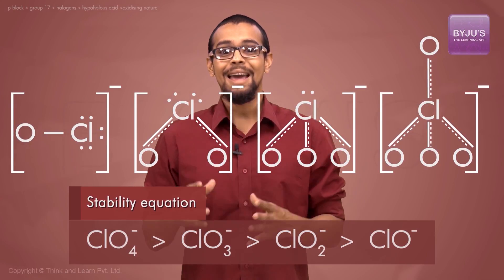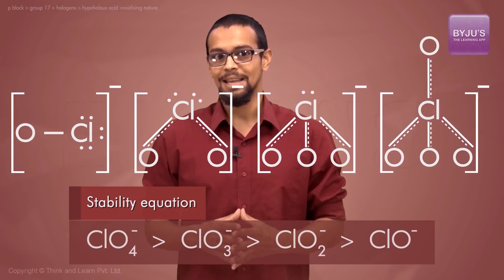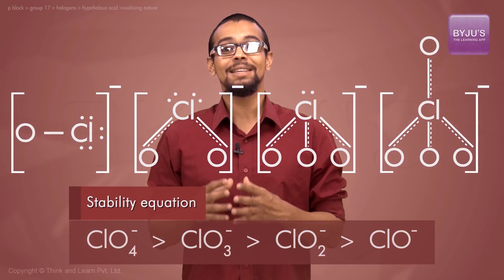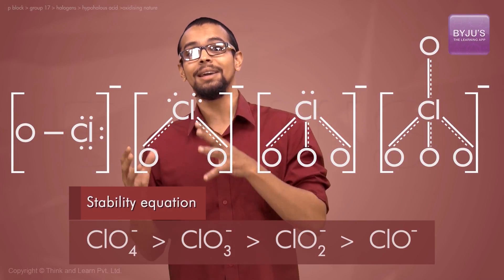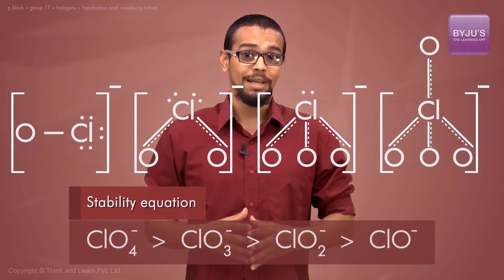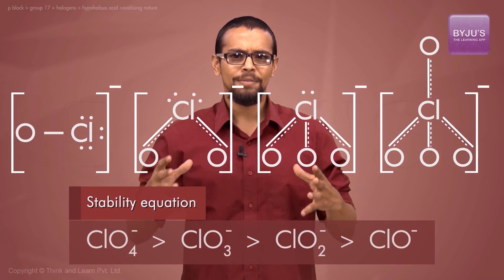The stability of the hypohalite ion decreases with decrease in number of oxygens along with the halogen. If the stability of the ion decreases, a stronger acid produces a more stable ion.